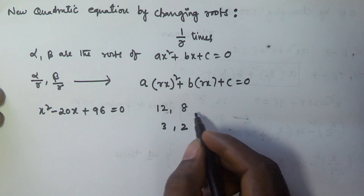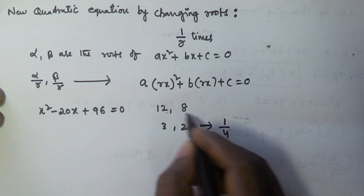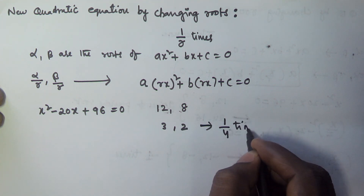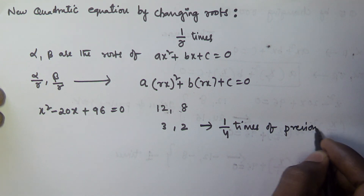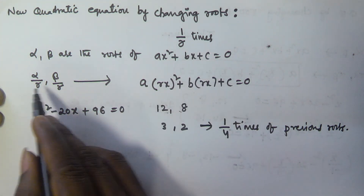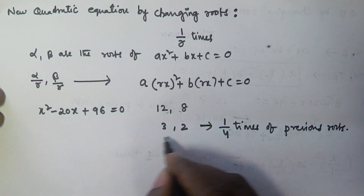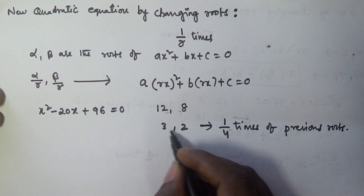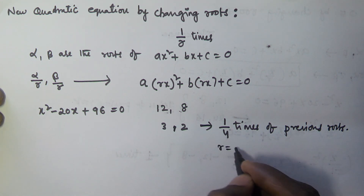If you observe, the new roots are 1 by 4 times of the previous roots. Since the roots are 1 by r times, here the r value is 4.